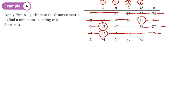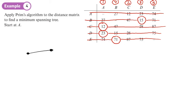Now we look for the lowest value not crossed out or circled in any of the four columns, which is 71. We circle 71 — that's vertex E — so it gets numbered five. We cross out row E, and since all rows are now crossed out the algorithm is finished. We draw the minimum spanning tree: vertex A and C have a weight of 12.